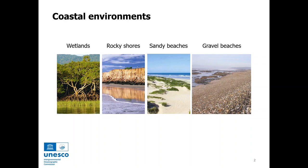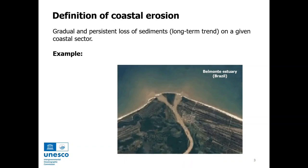Coastal areas are located at the transition between ocean and land, and in this region it is possible to find a variety of environments such as wetlands, rocky shores, sandy beaches, or gravel beaches. Due to the waves, tides, and sea level, these environments are constantly changing and naturally adapting to new conditions, and that's why these environments are some of the most dynamic environments in the world.